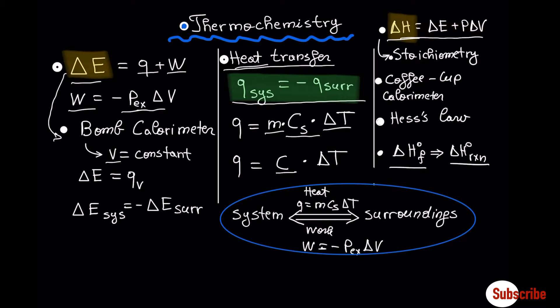Heat capacity is the amount of heat required to raise one degree Celsius the temperature of a certain amount of matter. In terms of enthalpy, we will see the coffee cup calorimeter — another calorimeter that operates at constant pressure — used to measure enthalpy experimentally, especially in aqueous solution. We are going to see Hess's Law to determine enthalpy without measuring it experimentally.